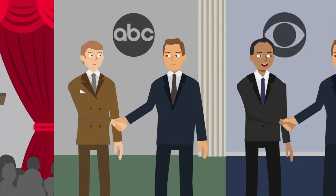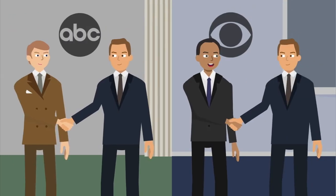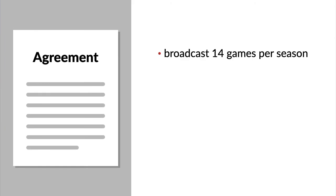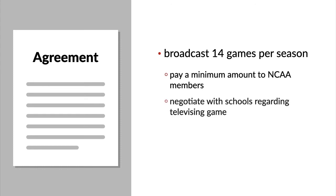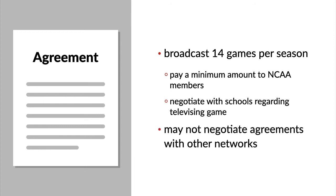In 1981, the NCAA entered into agreements with ABC and CBS, allowing each television network to broadcast 14 college football games per season. Each network agreed to pay a minimum amount to NCAA members and could negotiate with schools regarding televising games, but the NCAA didn't permit schools to negotiate agreements with other networks.